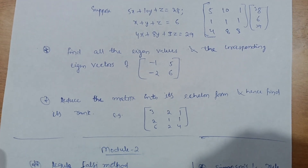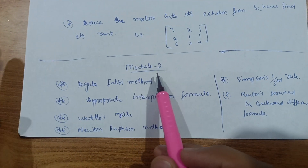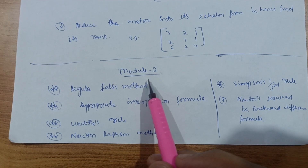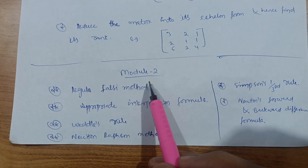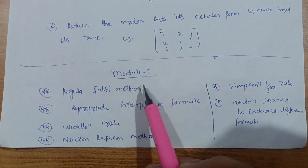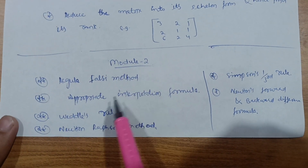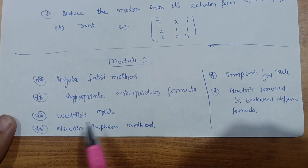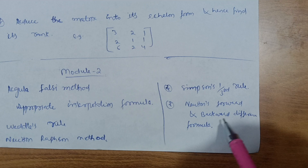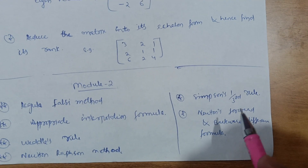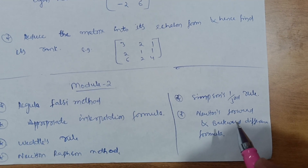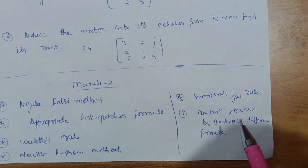Module 2 is the same as Mathematics 3 in engineering — the M3 series, which is the easiest. It covers the Regula Falsi method, appropriate interpolation formulas, Weddle's rule, Newton's Raphson method, Simpson's one-third rule, and Newton's forward and backward difference formulas. These are numerical value-based problems where you just substitute values into the given formula.